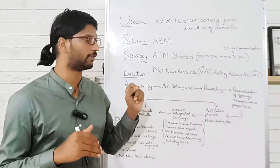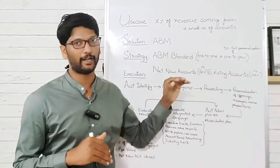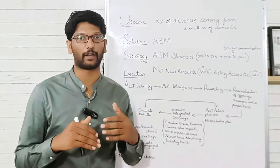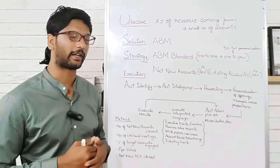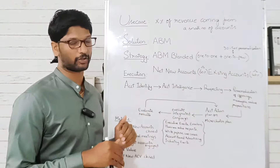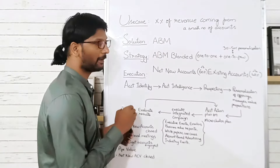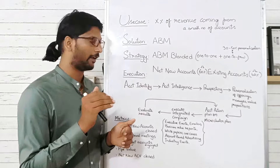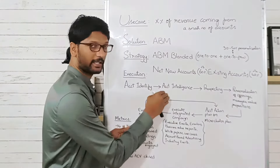When it comes to ABM Light, they'll have more net new accounts than existing accounts. In a blended approach, by looking at your existing accounts and your criteria for identifying accounts, you'll understand what kind of mix needs to happen between net new and existing accounts. Once you decide on this mix, you'll come up with a criteria for account identification, and with this criteria you will identify your accounts.